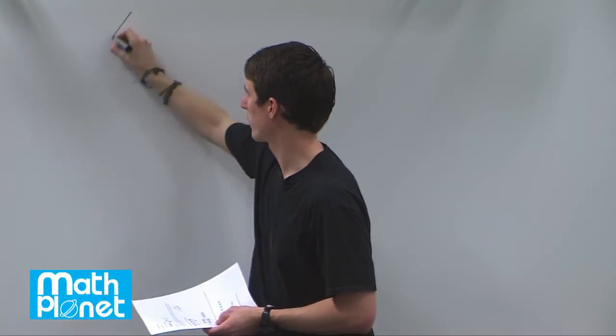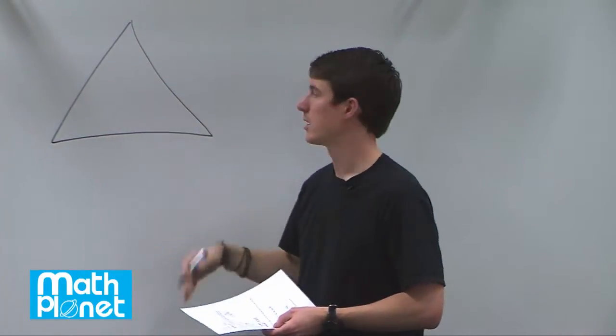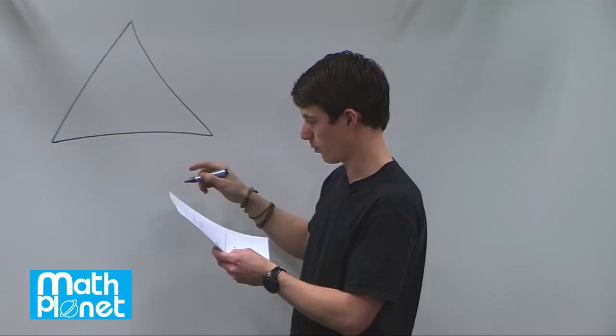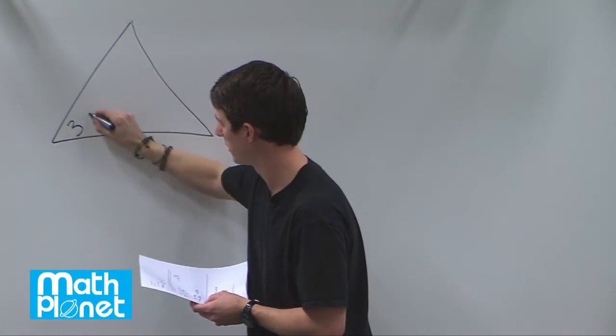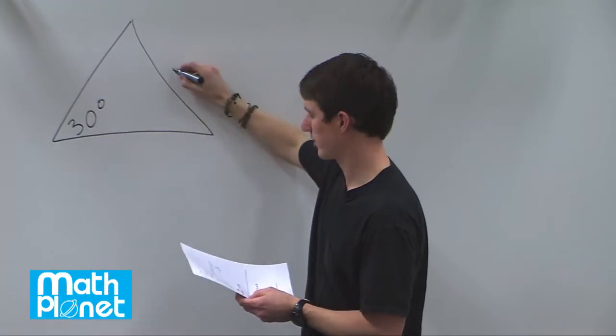If we're given a triangle that looks something like this, we don't really know all of the angles, but we're given a couple. We're given one angle is 30 degrees here, and the opposite of that is length 2.